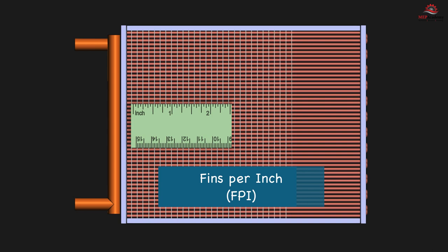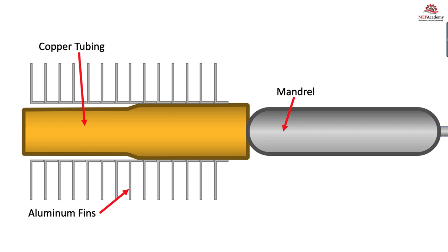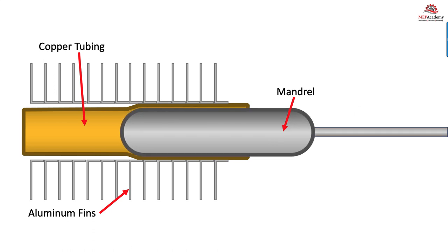Coils can be provided with anywhere from 4 to 20 fins per inch. Increased surface area — meaning more fins per inch or more rows — will increase the heat transfer capabilities, but at the cost of fan energy. Coil manufacturer's software will pick the best coil with the least number of rows to meet the project requirements. The fins are attached by forcing a mandrel through the copper tubing, causing the tubing to expand and tighten against the fins. This ensures a good bond between the tubing and the fin, which creates good thermal conductance for heat transfer.